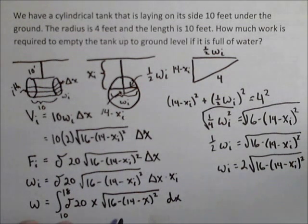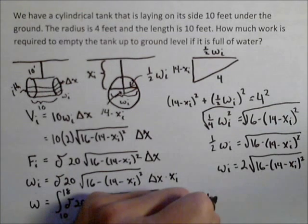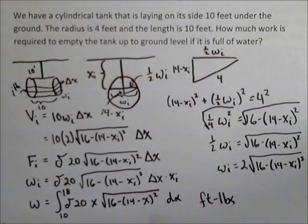So my limits are going to have to be 10 to 18, and so there's the integral that will calculate this. And when we're all done, the units are going to be foot-pounds. I'm going to leave it up to you guys to calculate the definite integral. It's actually not a bad integral, which you can actually use a substitution to take care of the x's and make it a little bit easier to deal with. So that's how we can set that one up.